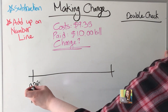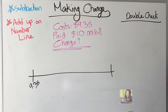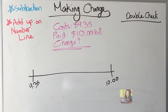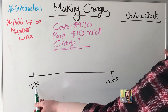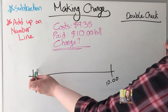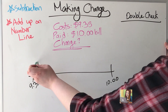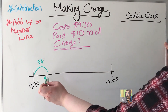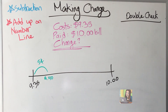To start, let's put these numbers on our number line. We have nine dollars and 35 cents, and we're going to add up to get to ten dollars. I'm going to add small coins and benchmarks to help. So starting from nine dollars and 35 cents, I'll add five cents, and that gets me to nine dollars and forty cents.